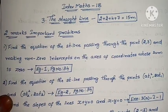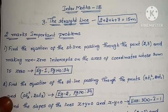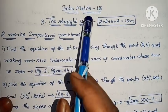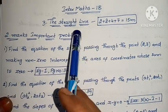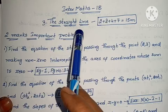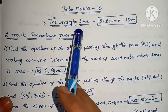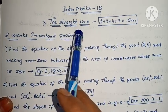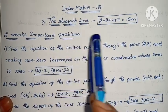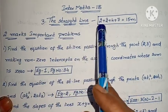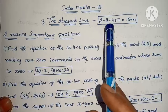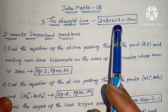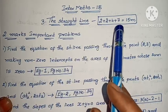Hi, welcome to Bairnika Maths. This is my third chapter, The Straight Line. This chapter has 2 marks, 4 marks, and 7 marks.